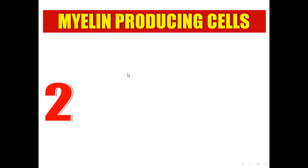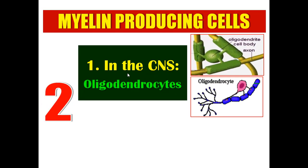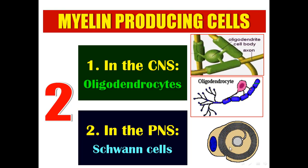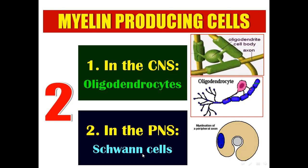We have two types of myelin-producing cells. In the central nervous system — the brain and the spinal cord — oligodendrocytes produce myelin. In the peripheral nervous system, we have Schwann cells. The Schwann cell wraps around the axon. So oligodendrocytes in the CNS, and Schwann cells in the peripheral nervous system.